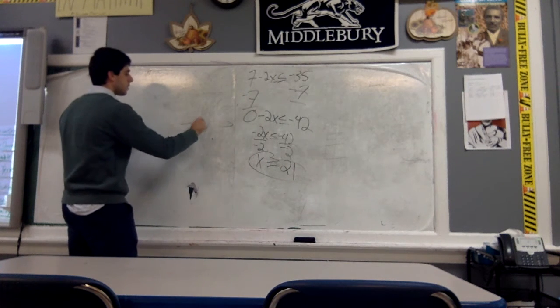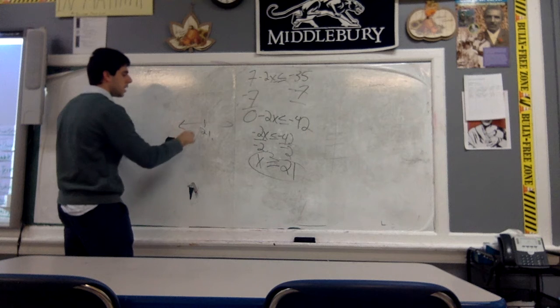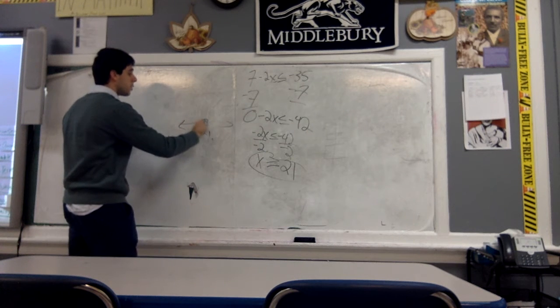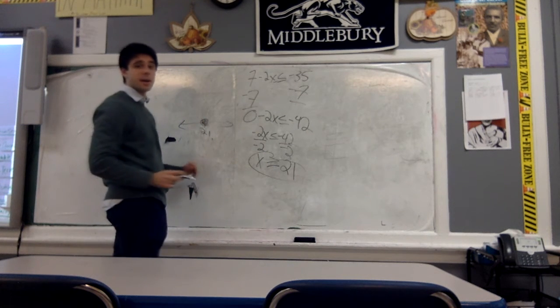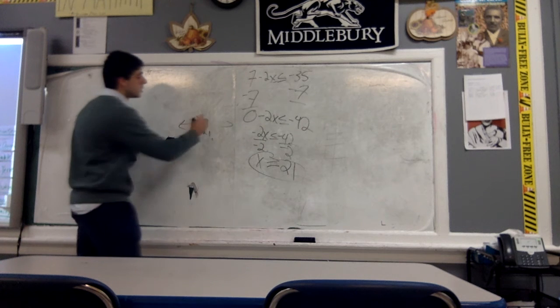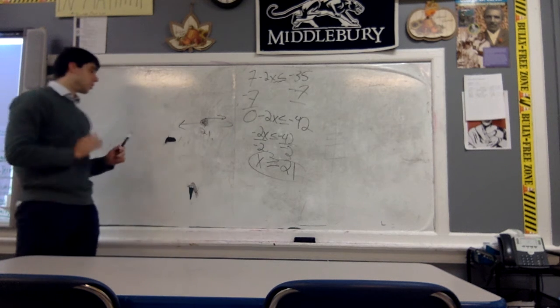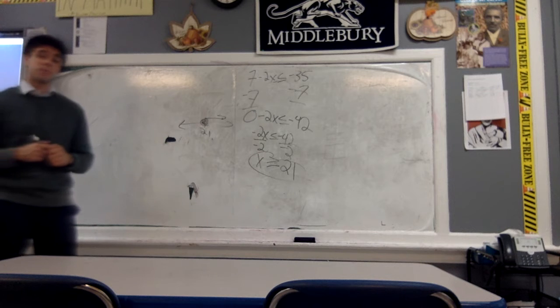On a number line, we have 21 here. Our circle is going to be filled in on the 21 because this includes 21 as one of our values. And we're looking at all values greater than 21, so it's going to be going to the right or, as we say in our classroom, towards the door.